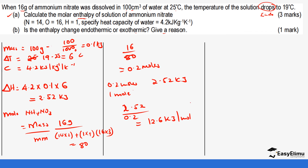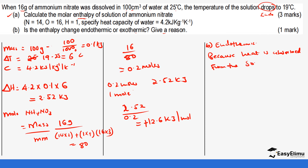Since this reaction is endothermic, the answer is positive: +12.6 kJ/mol. For part B, the enthalpy change is endothermic because heat is absorbed from the surroundings, causing a temperature drop.